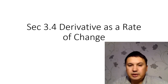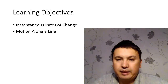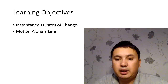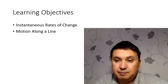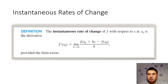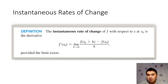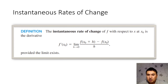Hello, now we will discuss derivative as a rate of change. Our learning objectives are instantaneous rate of change and we will discuss motion along a line. Derivative can be interpreted in two different ways: the first one is a geometric interpretation where we realize derivative as a slope, and the second interpretation was realizing derivative as an instantaneous rate of change.